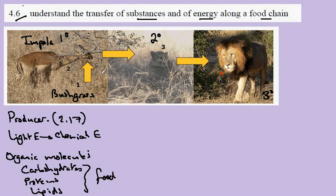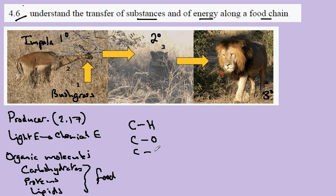These molecules that we would call food — these molecules in the bush grass are food to the impala, and these molecules in the impala are food to the cheetah, and in turn these molecules in the cheetah are food to the lion.